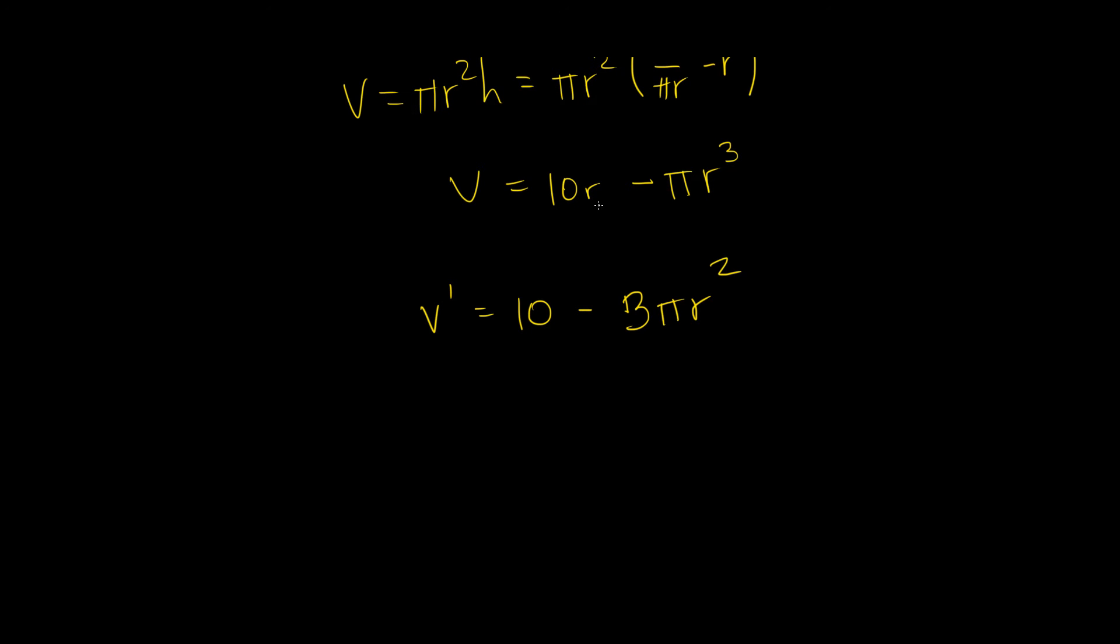So the derivative of 10 r, the r just becomes 1 and we get 10, and here we do the power rule, the 3 drops down and we get 3 pi r squared. Cool. So all we have to do now is set this equal to 0, so we say 0 is equal to 10 minus 3 pi r squared, and we just solve for r.